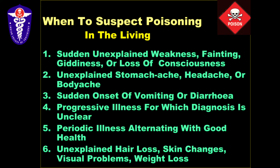These manifestations must not be explained by any disease or other affliction — when all those have been excluded, only then do you start to suspect poisoning. Then you have sudden onset of vomiting or diarrhea without apparent cause; once food poisoning is ruled out, you have to suspect exposure to some toxic substance. Progressive illness for which diagnosis is unclear can indicate chronic poisoning. Periodic illness alternating with good health is also important — in chronic poisoning somebody may be periodically poisoning somebody so it may not be a continuous exposure.